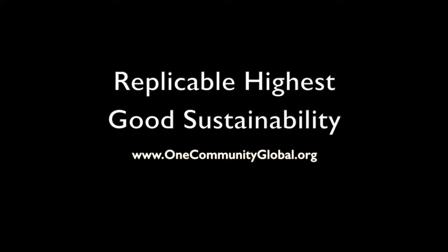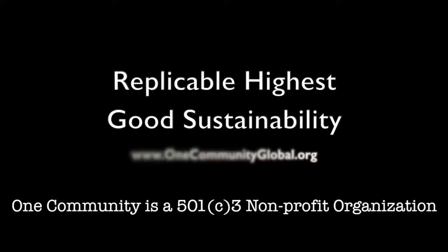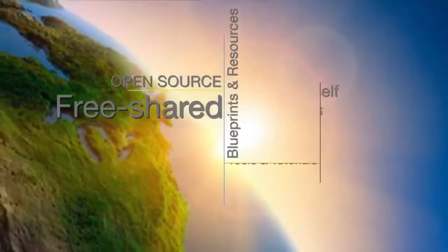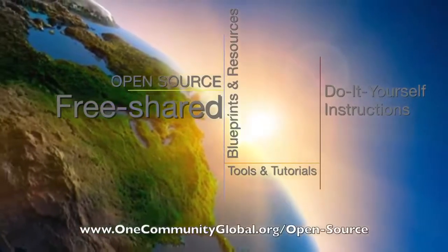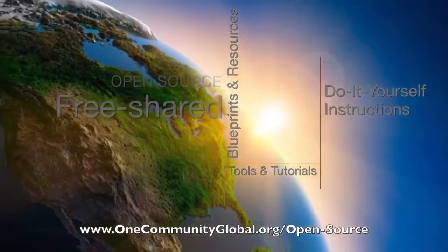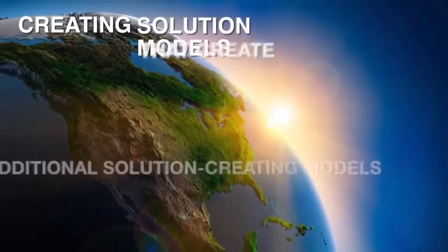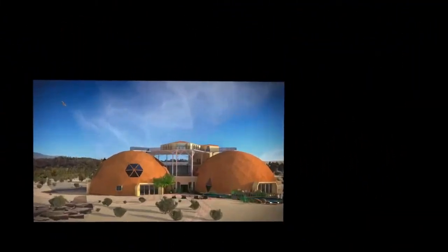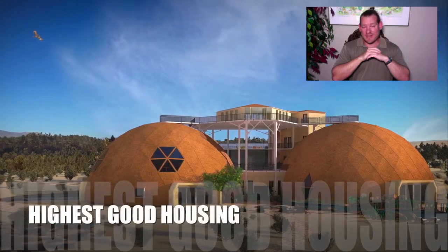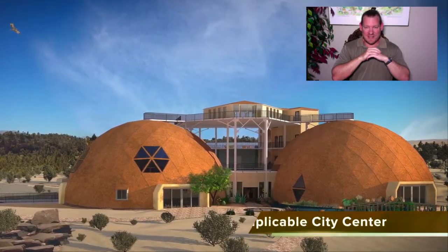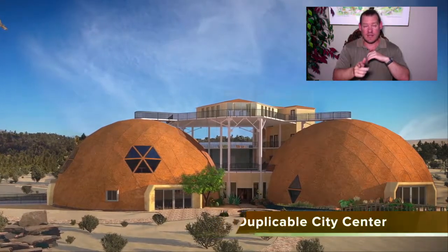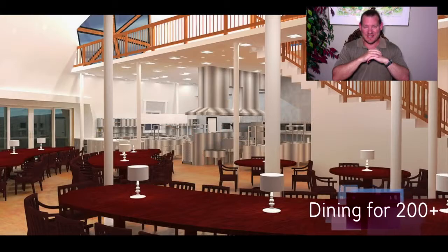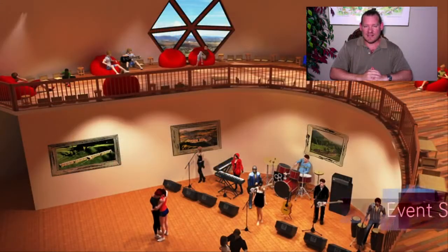Replicable Highest Good Sustainability — One Community Weekly Progress Update Number 223. One Community is a 501c3 non-profit organization creating open source and free shared blueprints and resources, tools and tutorials, and do-it-yourself instructions for highest good living. My name is Jay Sabel and I'm the Executive Director of the One Community 501c3 non-profit organization. This is our Weekly Progress Update Number 223, July 2, 2017 edition. Today I'd like to talk about Replicable Highest Good Sustainability.